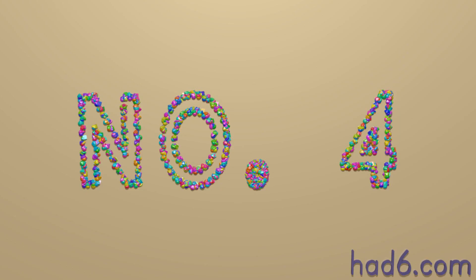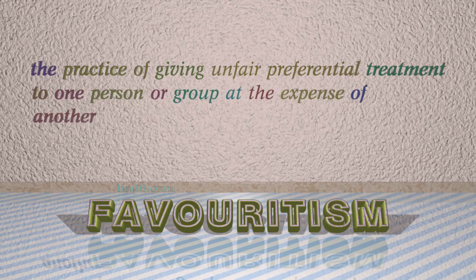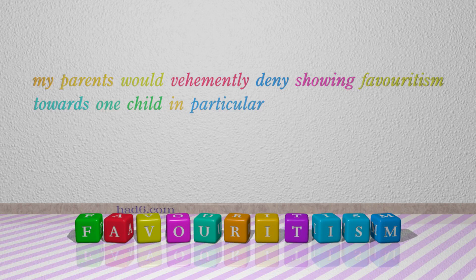Number 4: Favoritism. Which means: The practice of giving unfair preferential treatment to one person or group at the expense of another. For example: My parents would vehemently deny showing favoritism towards one child in particular.